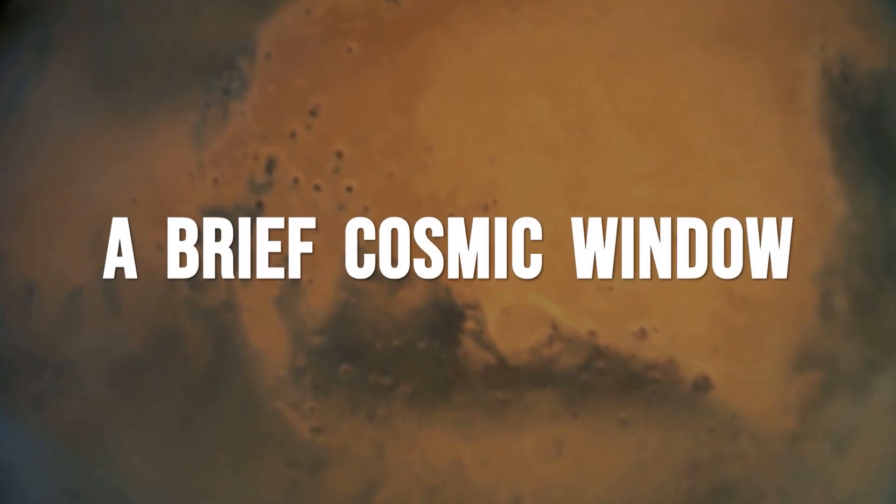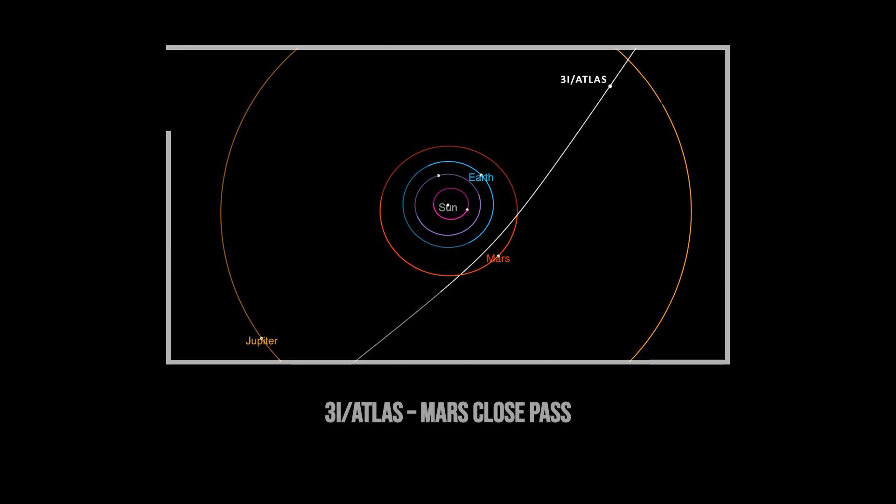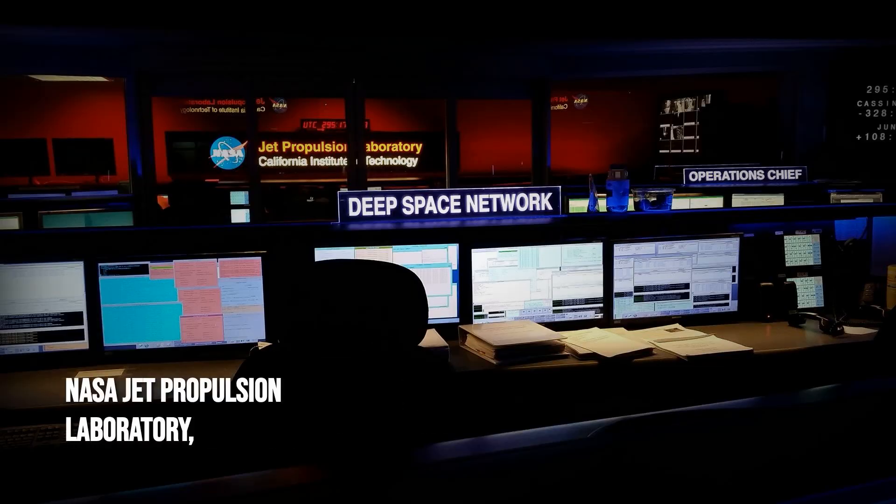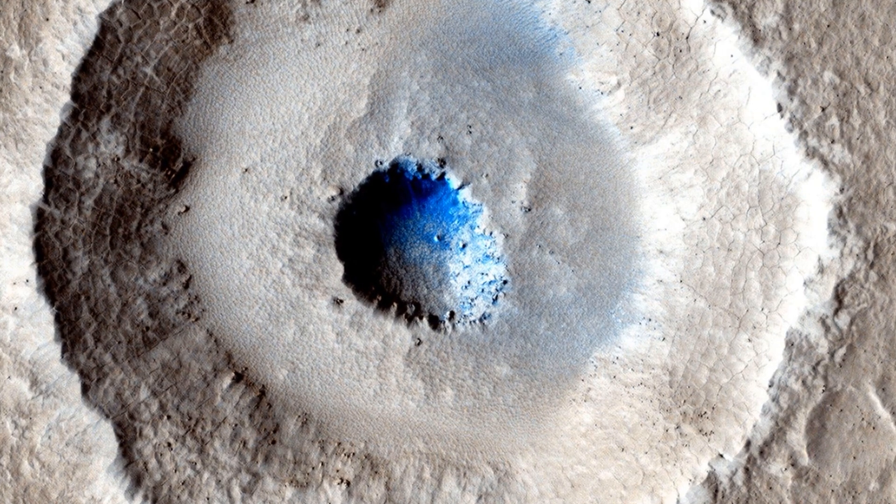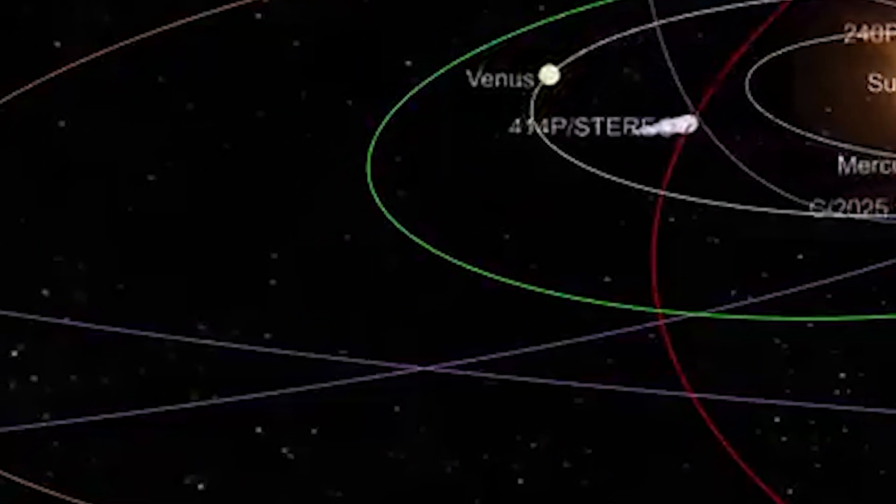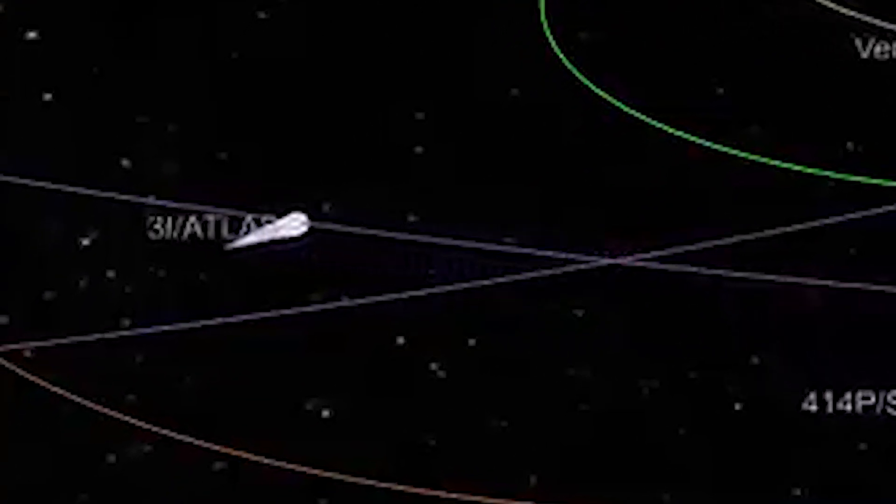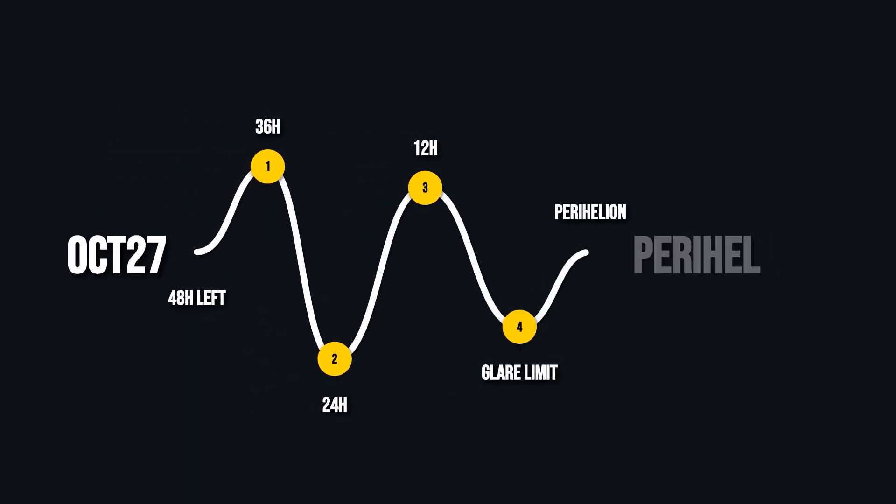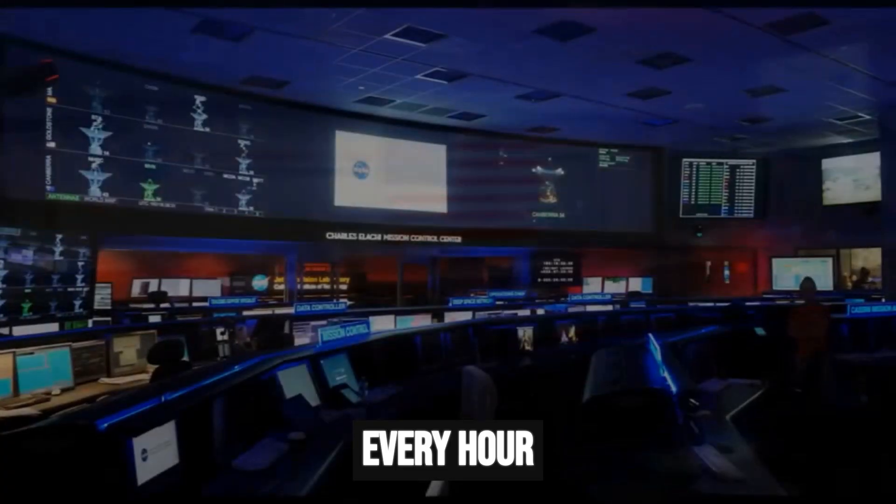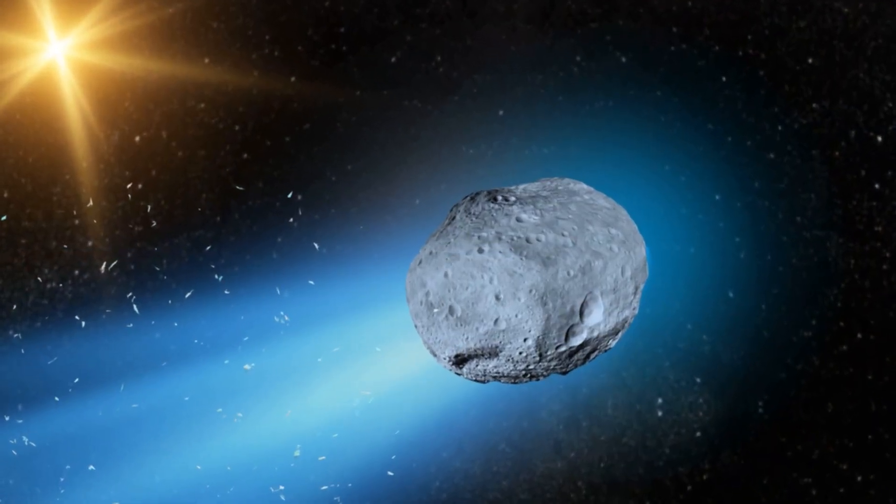October 3rd brings a rare close pass by Mars. Just a quarter of an astronomical unit separates 3I/Atlas from the red planet. Teams at NASA and ESA scramble to align Mars Reconnaissance Orbiter's HiRISE camera, hoping for the sharpest images yet from a front row seat. This is a one-shot window. After Mars, the comet races toward superior conjunction on October 21st, slipping behind the sun and vanishing from Earth's view. By October 29th, it reaches perihelion, but for ground-based telescopes, time is nearly up. Every hour matters as mission planners coordinate their final observations before the comet disappears into solar glare.